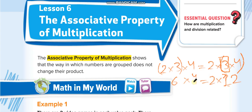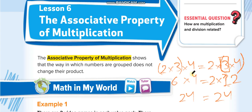Six times four is twenty-four, and two times twelve is twenty-four. On both sides we get the same answer. Here we created the group of two and three, and there the group of three and four, and we get the same answer.